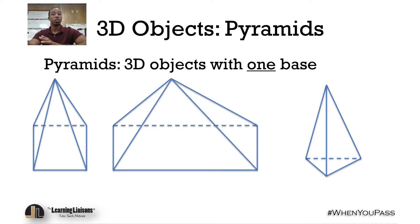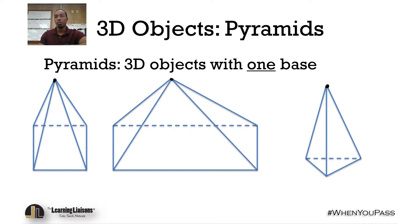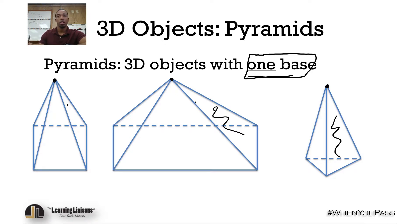When we're discussing pyramids, they're a little different. Instead of having two bases, they have one base, because all of the faces meet at one point. So one base is a key piece of information. Also, the lateral faces are all triangles — triangle, triangle, triangle. Whether it's a square, rectangular, or triangular pyramid, all the lateral faces are triangles.